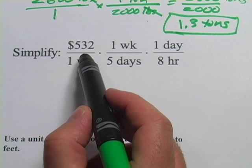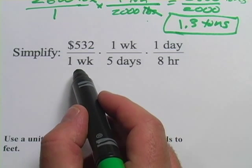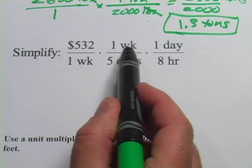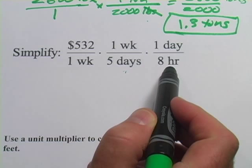They started with this number, $532 in one week. So that must be how much they make, that must be their paycheck. And then in one week they work five days, and in one day they work eight hours.